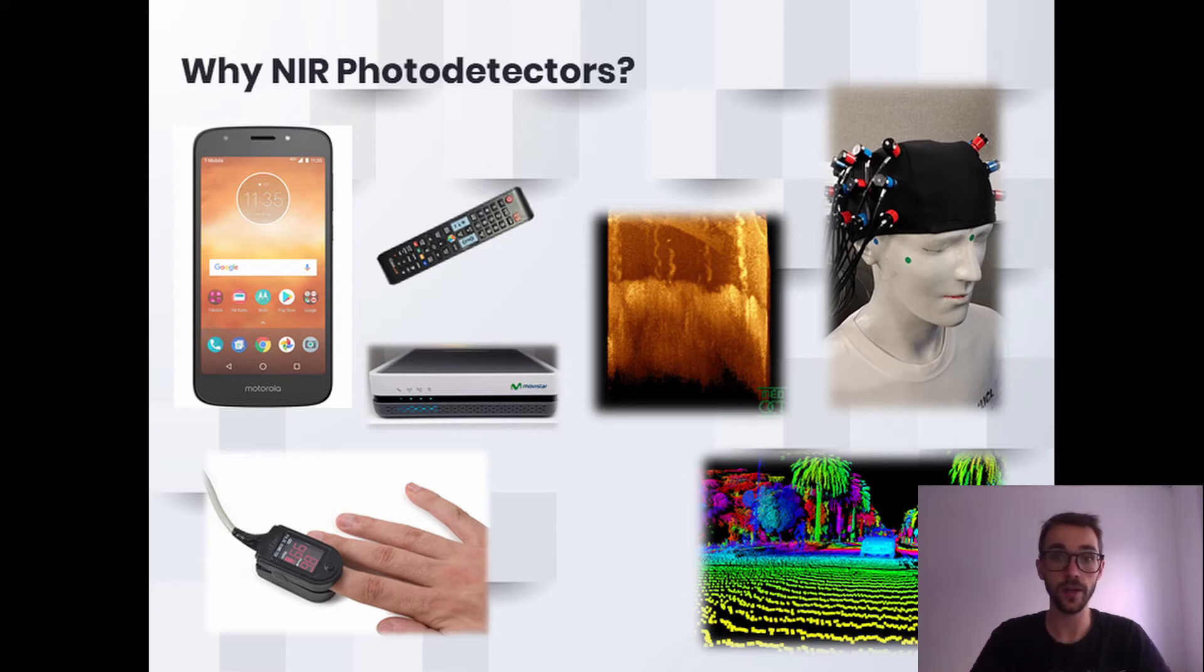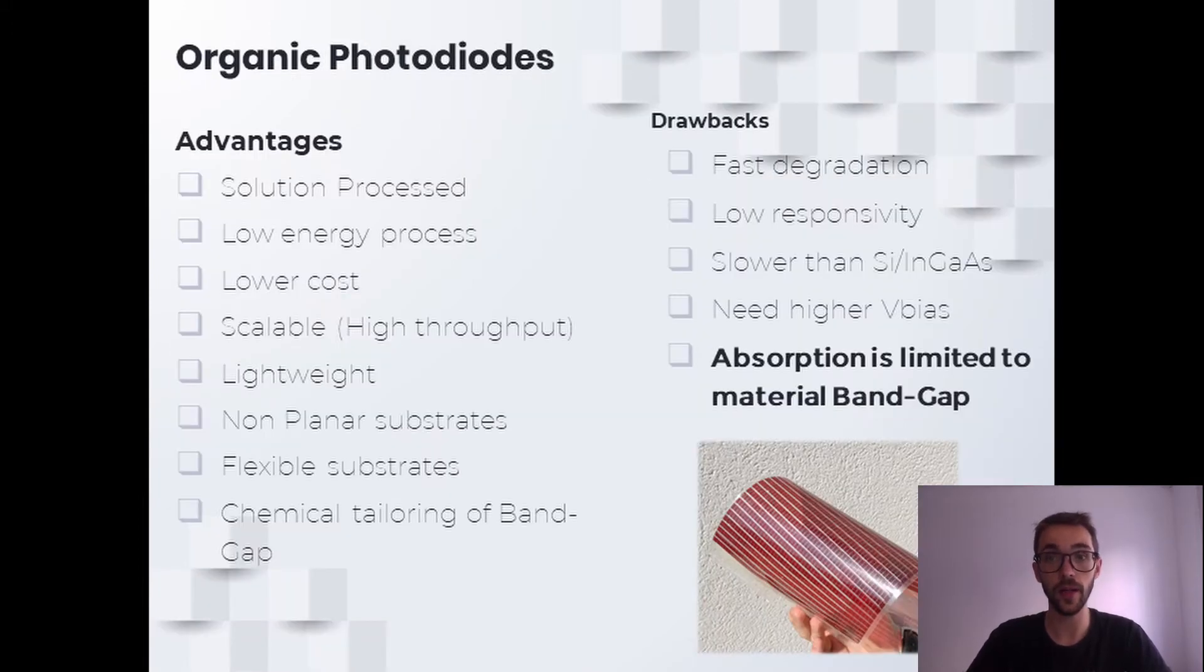Okay, so now that we are convinced that near-infrared photodetectors are great, why would we want to make them organic? Well, because they pose a series of interesting advantages. They can be processed from solution, so they can be printed, which means we do not have to spend so much energy on the manufacturing process, which means it costs less to produce.